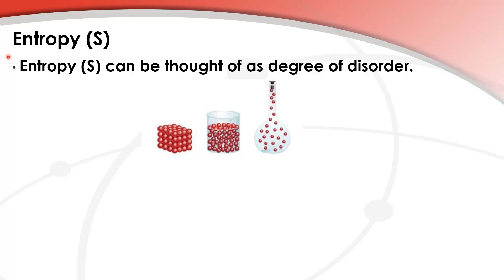In this video we look at entropy. Entropy can be thought of as degree of disorder. Here we have the particle models of a solid, a liquid and a gas. The particles in a solid are very ordered so solids have low disorder — they have low entropy.